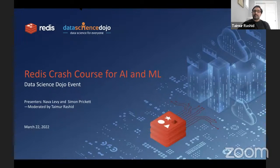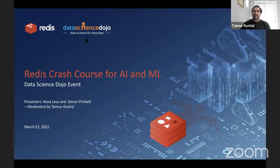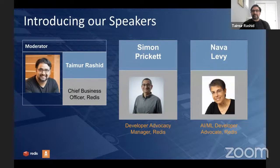We will be issuing out certificates of attendance, available towards the end of the webinar. It's my pleasure to introduce our two speakers. First, I'd like to introduce Simon Prickett. He is the Manager of Developer Advocacy at Redis. Simon is an experienced systems architect, technical trainer, technical blogger, mentor, product manager, and developer advocate. In his spare time, he enjoys tinkering with Raspberry Pi and Arduino single-board computers and building hardware projects with them.